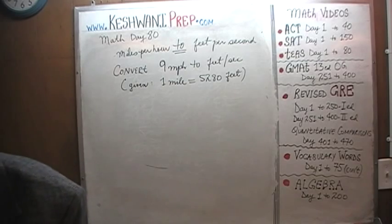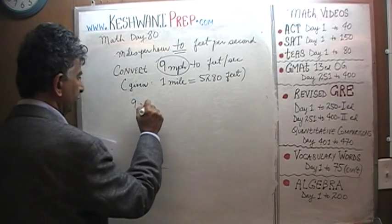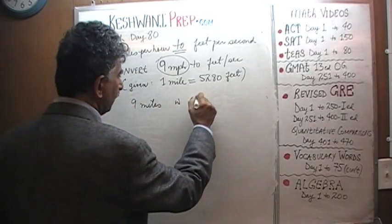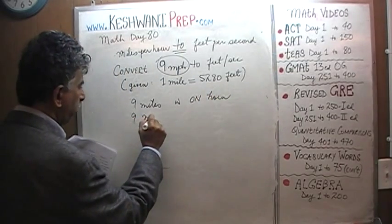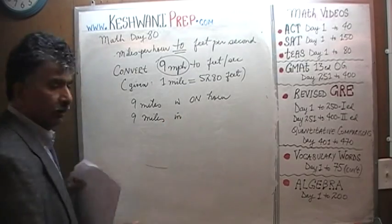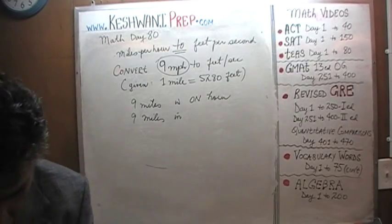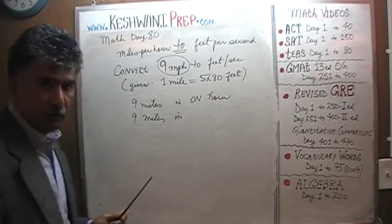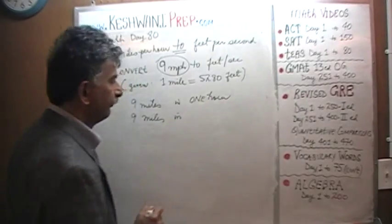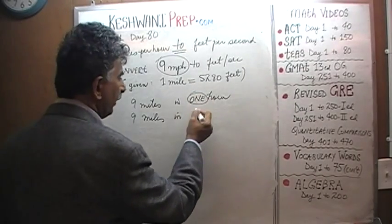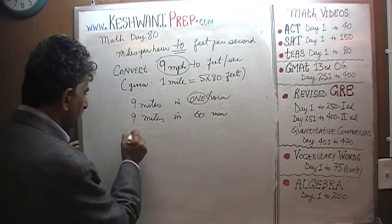So we know that we are going 9 miles per hour - that's 9 miles in one hour. We also know that one hour is the same as 60 minutes.